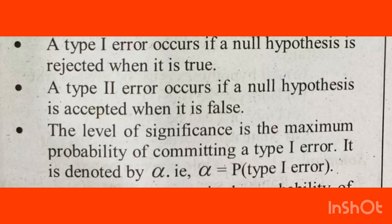What is Type 2 error? Type 2 error involves the null hypothesis being false but we accept it. The Type 2 error is the situation where we are accepting the null hypothesis when it is false. If we are going to accept a false null hypothesis, that is the Type 2 error.